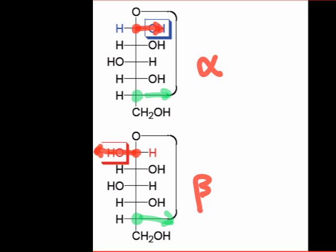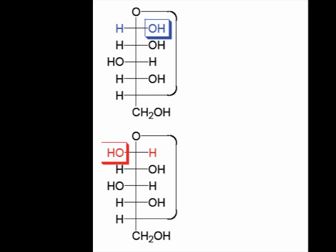Although Fischer projections make it easy to see the stereochemical differences between anomers, they tend to obscure the three-dimensional structure. A view of cyclic sugars called a Haworth projection takes us one step closer to the true three-dimensional structure of cyclic sugars.